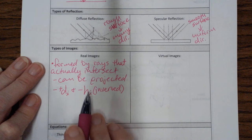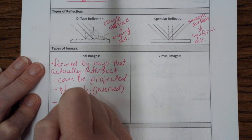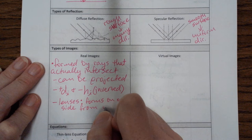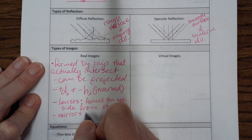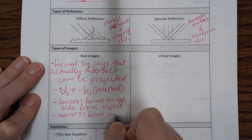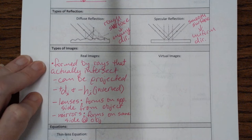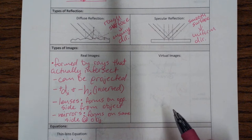Real images are always inverted. For lenses, the real image forms on the opposite side from the object. For mirrors, the real image forms on the same side as the object. So with a mirror, the reflection comes back to you, but it appears as though the image is projected in front of the mirror.